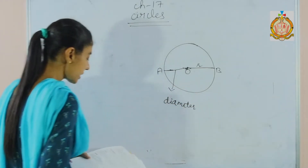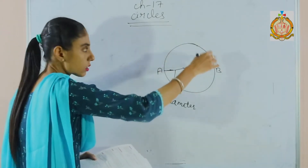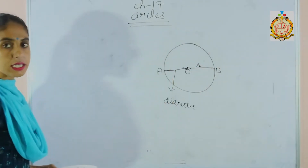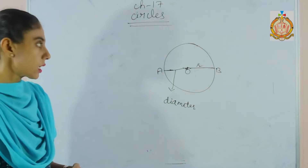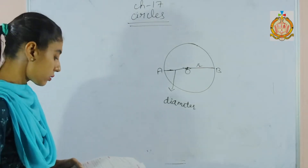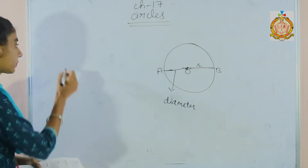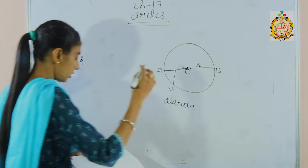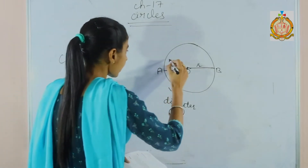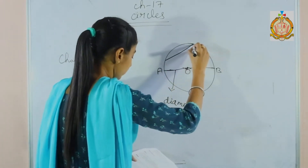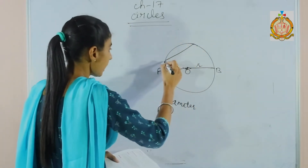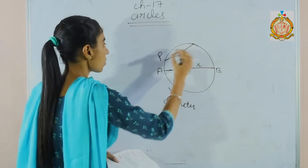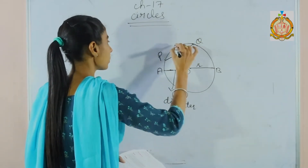Next is the circumference. The distance around the edge of the circle is called the circumference of the circle. Next is a line segment inside a circle whose end points lie on the circle — this is called a chord.